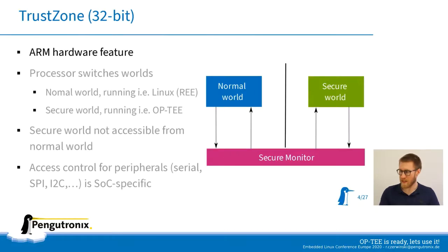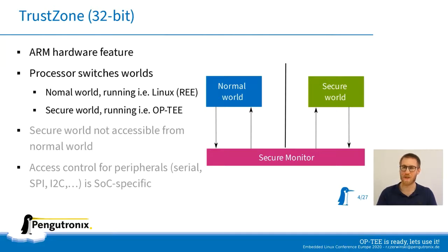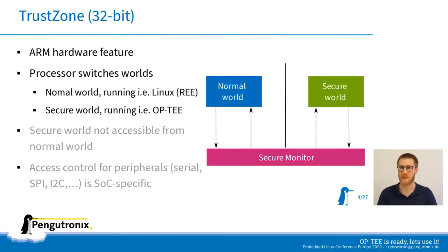TrustZone is an ARM hardware feature found on almost every modern ARMv7 SoC. The general idea is that your processor is able to switch between two different worlds: the normal world and the secure world. The normal world runs a standard operating system like Linux, and the secure world runs a stripped-down execution environment — in our case, OP-TEE. The normal world communicates with the secure world via a secure monitor, which ensures memory addresses are translated and no data leaks between the two worlds.